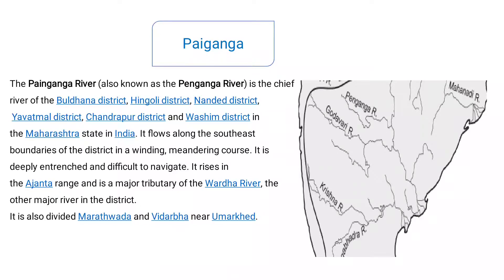The Pai Ganga River divides Marathwada and Vidarbha near Ambakhil. On the Marathwada side, Aurangabad, Nanded, and Buldana districts are included. On the Vidarbha side, Nagpur and the Nagpur area are included. Ambakhil is where the boundary between these separate districts is formed. This is the Pai Ganga River, and it is the third West Flowing River of Maharashtra.